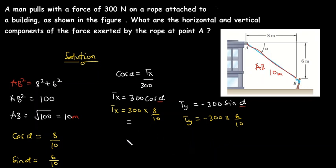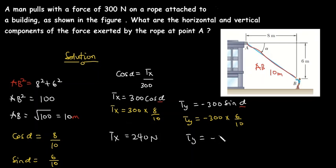Punching those values into the calculator: 300 × (8/10) gives TX = 240 newtons, and −300 × (6/10) gives TY = −180 newtons. So those are the X and Y components of the 300-newton force the rope exerts at point A.